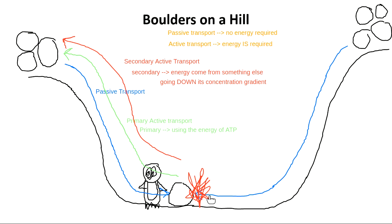In real life with cells, we have something called the sodium glucose co-transporter. The kinds of things doing this would both cross the membrane at the same time, so they both end up in the same place, basically.